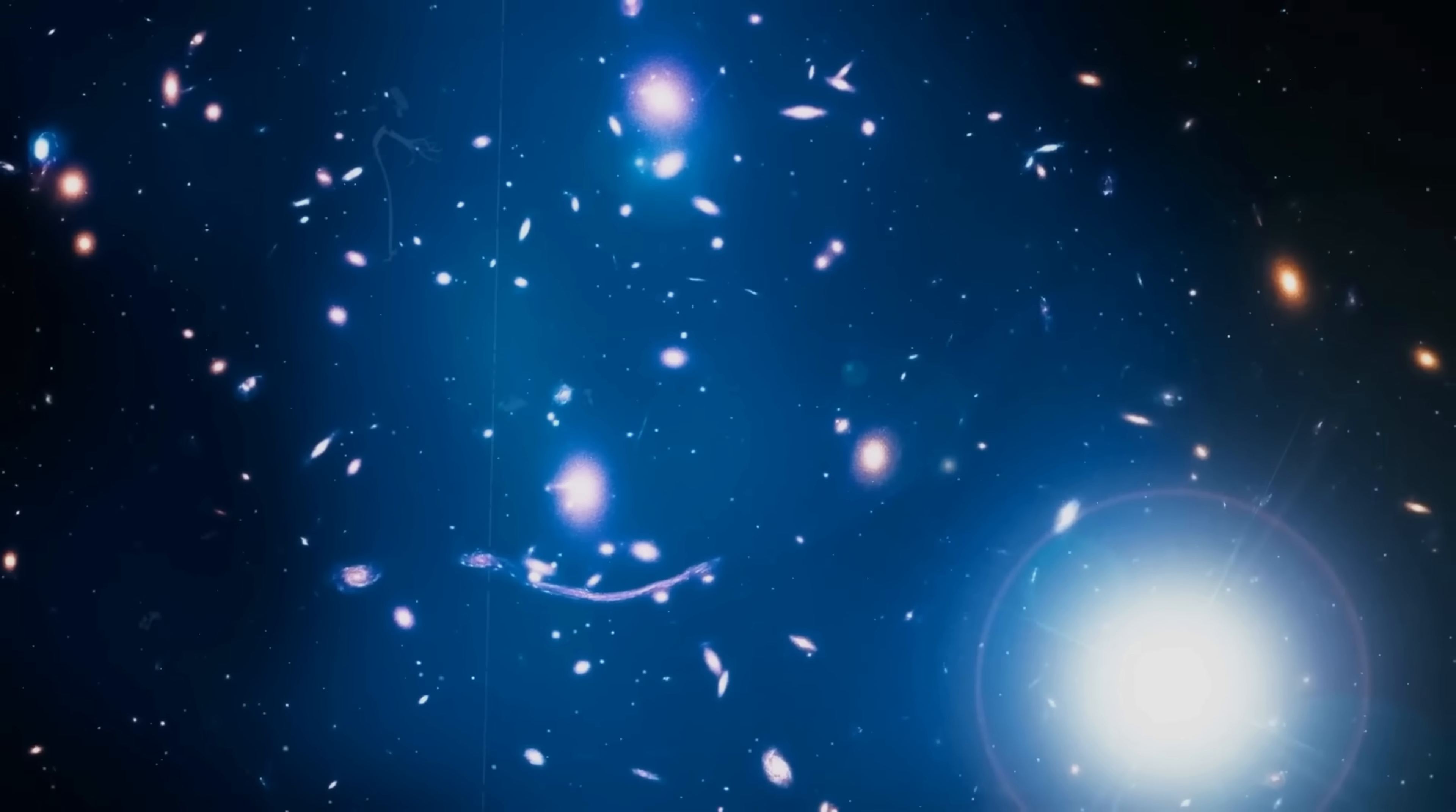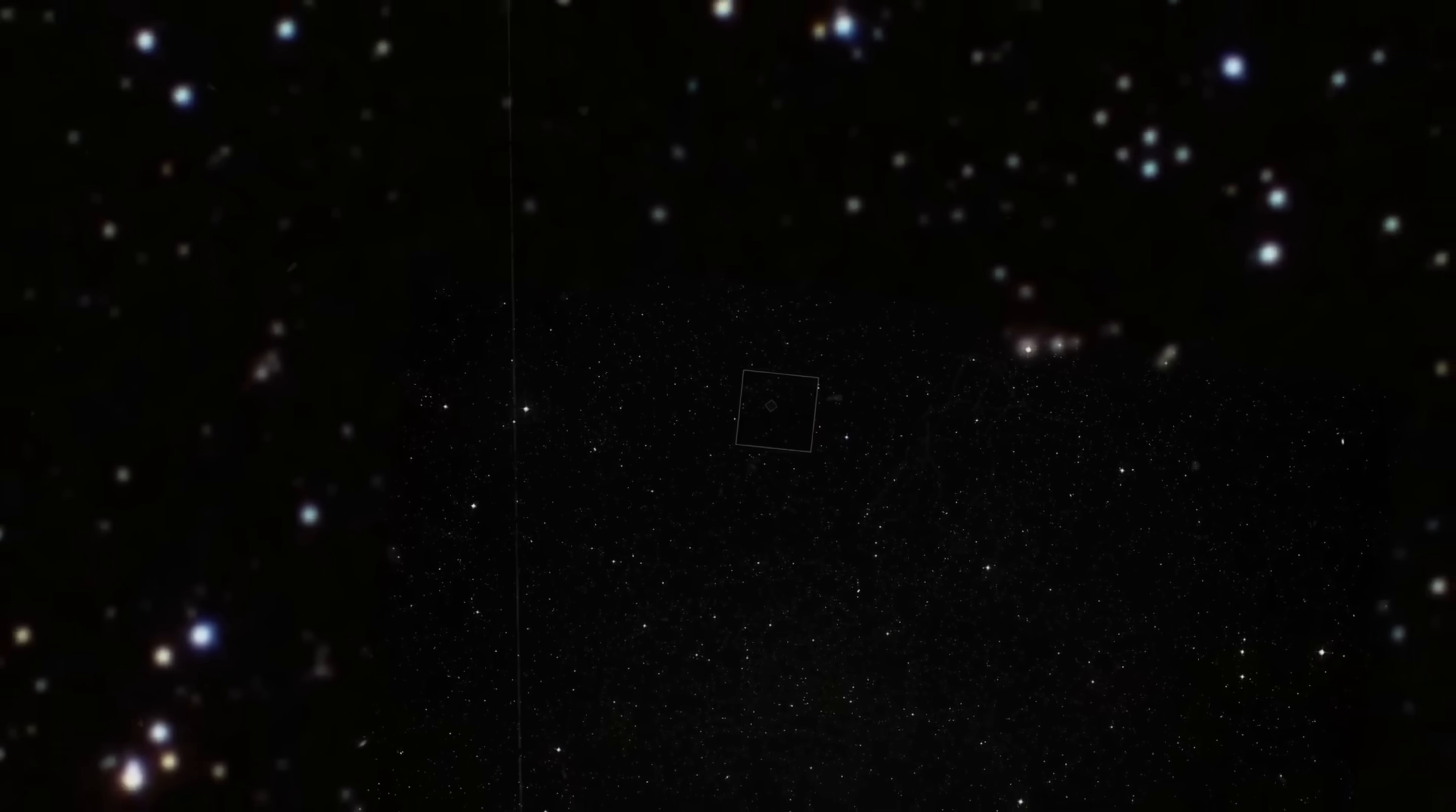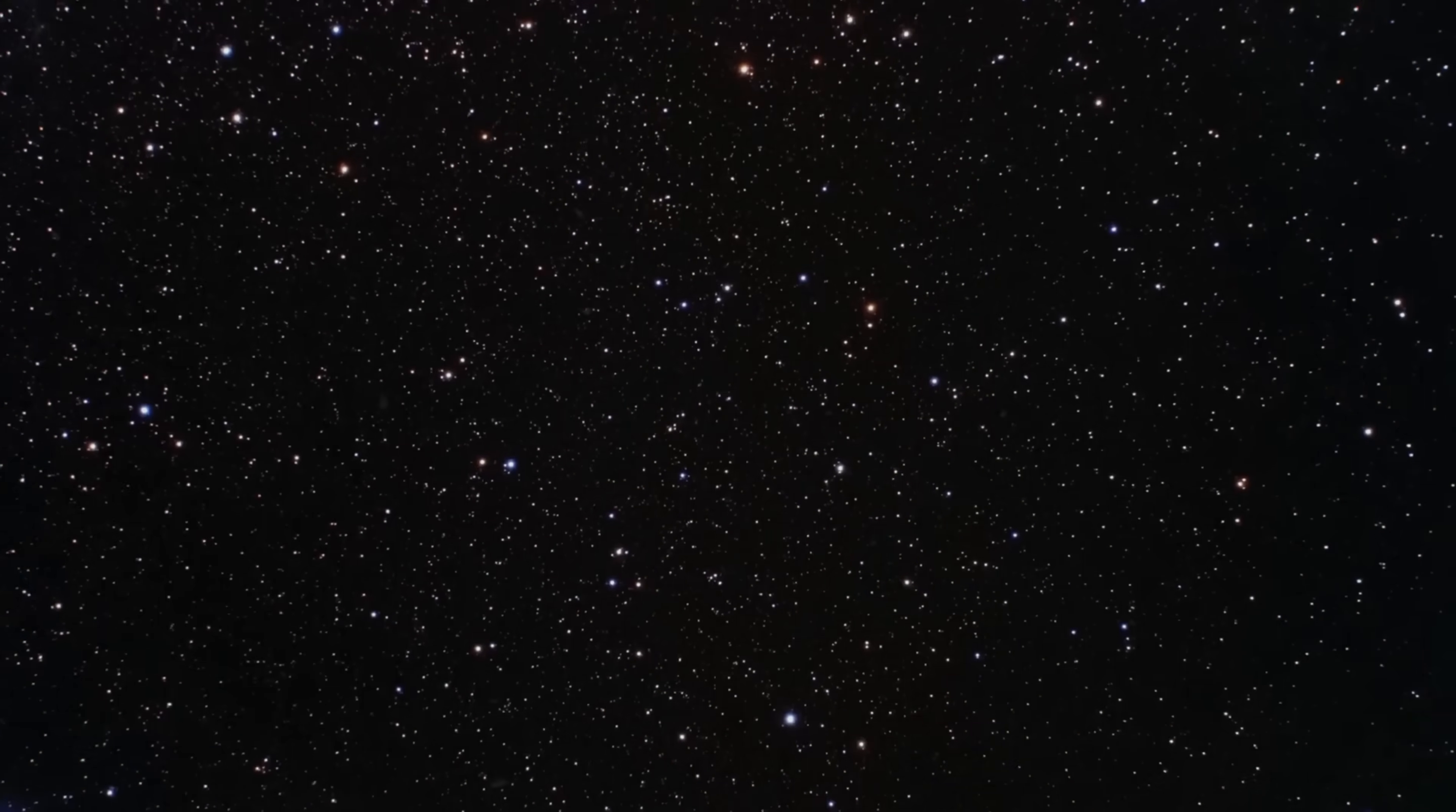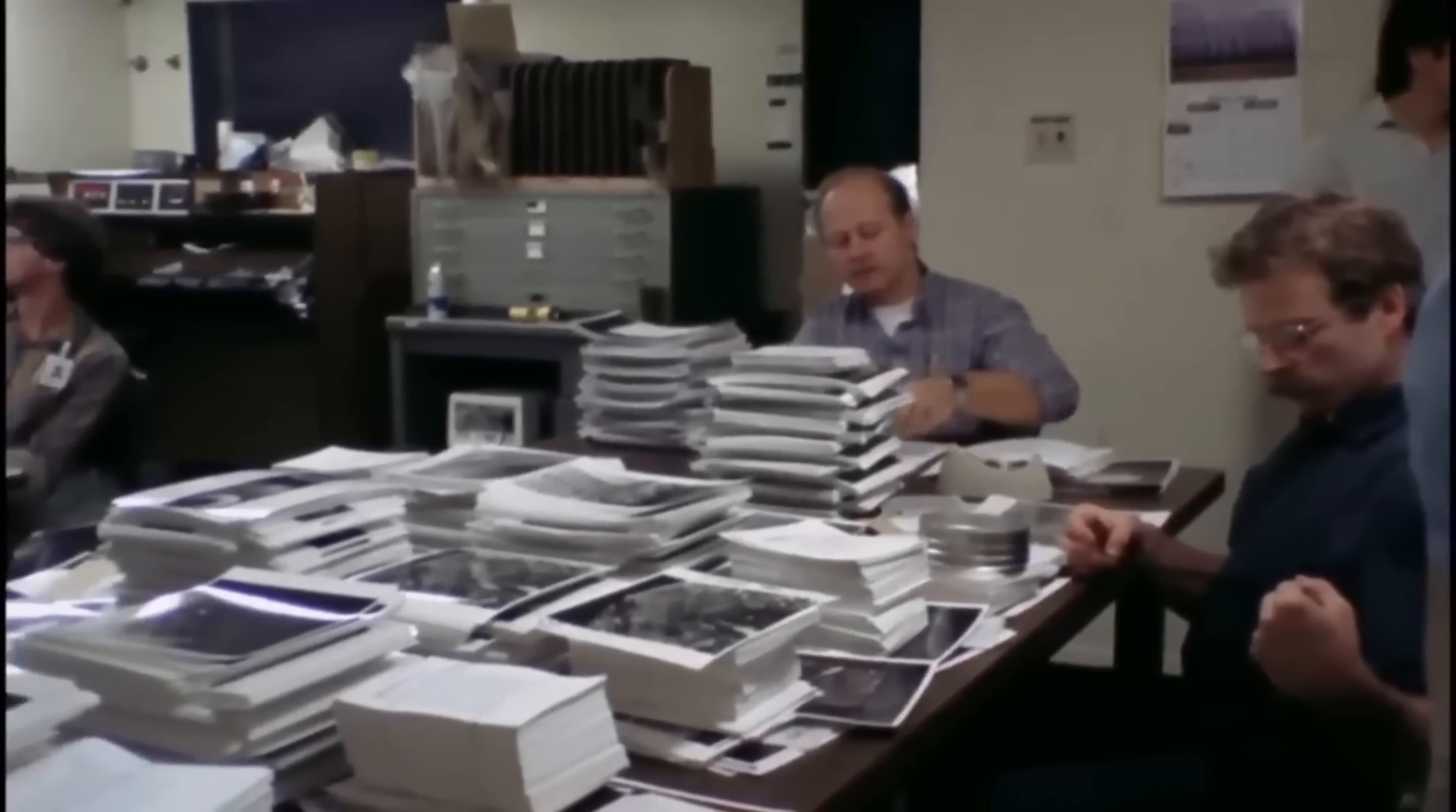Let's break it down. A megaparsec is about 3.26 million light-years, and one light-year is nearly 9.5 trillion kilometers. So when we say the Hubble constant is 67 kilometers per second per megaparsec, it means that for every 3.26 million light-years of distance, galaxies are moving away 67 kilometers faster every second. That's an eye-popping 244,000 kilometers per hour.